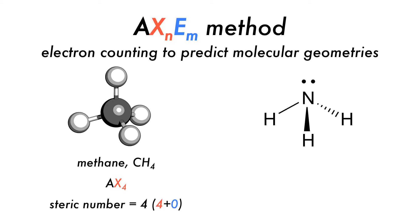For methane, we have the formula CH4, which in terms of AXE is AX4E0. Because we always have A and there are four hydrogen atoms or ligands bonded to A, we normally omit E if there are no lone pairs, giving us a steric number of 4.